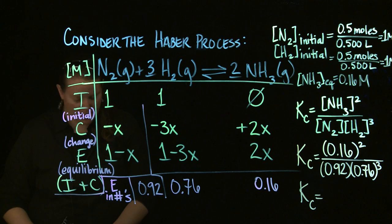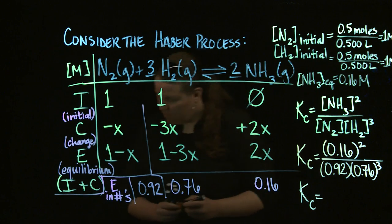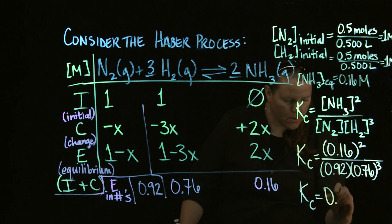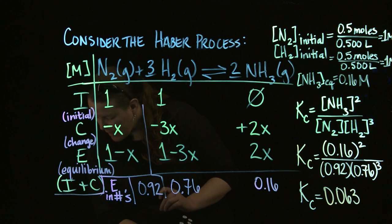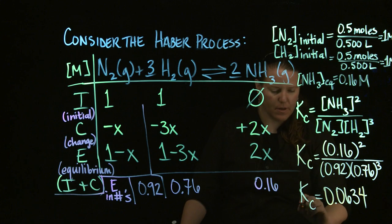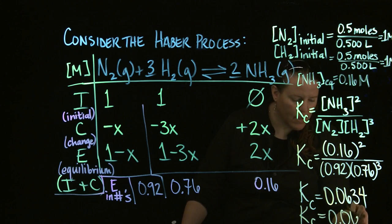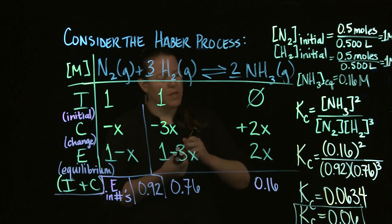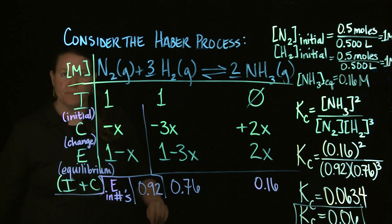This would be the Haber process at ridiculously low temperatures. But alas, divided by 0.76 cubed, and I got a number like 0.06. 3.388629, which I'm going to say 0.0634, which actually because of the one significant digit up here we would relabel this as 0.06, which, like I said, the Haber process is usually greater than one, so this is a bit of weirdness, but you get the point.